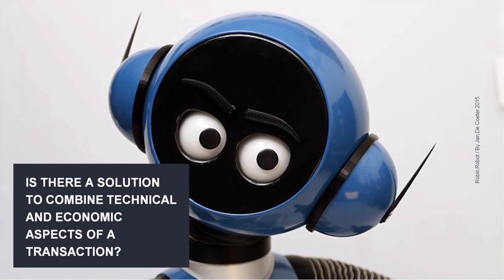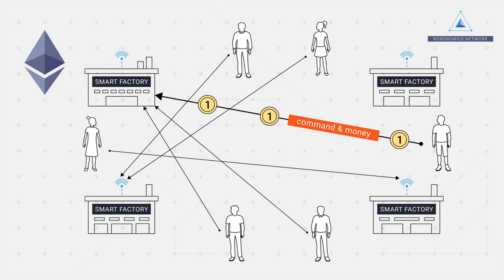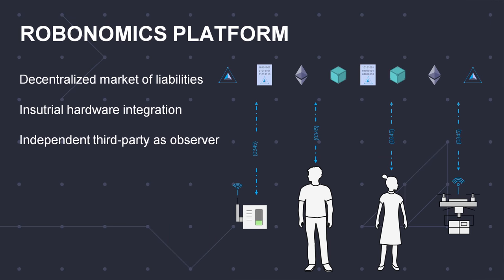Maybe we have an alternative now — a solution for direct interaction between humans and smart factories. We already have the Ethereum network, and smart contracts help us to combine technical data and economical data in one transaction. But Ethereum is not enough. We also need a market to help customers find production and services, and we need integration between industrial hardware, software, and the digital world. For this reason, we developed the Robonomics platform.